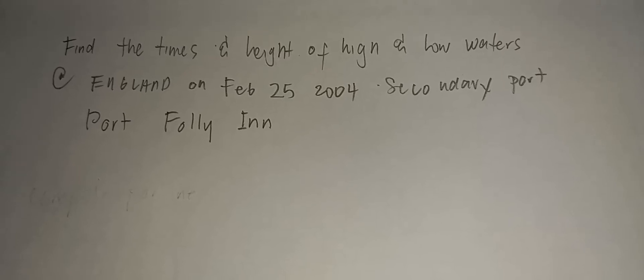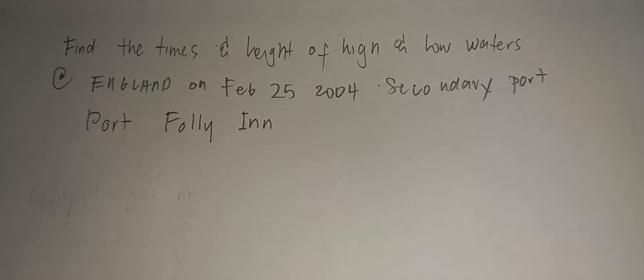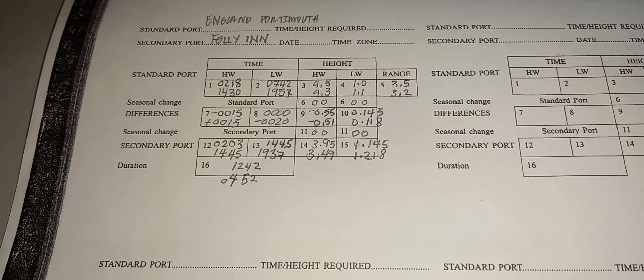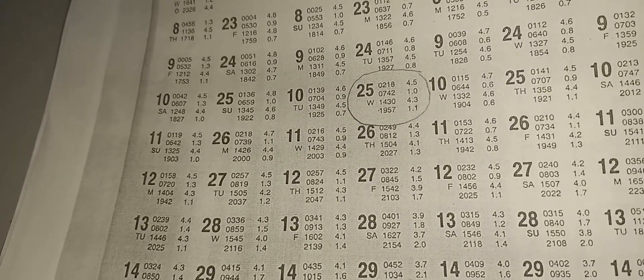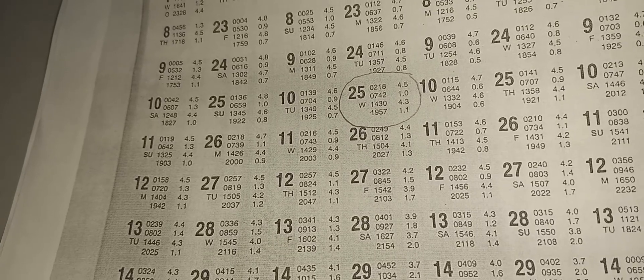Now we're going to solve and find the times and height of high and low waters at England on February 25, 2004. Our secondary port is the Port of Foley-in. To get that, we need to find February 25 — so there you go, February 25.